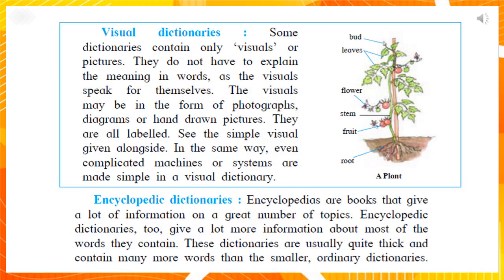See the simple visual given alongside as an example. In the same way, even complicated machines and systems are made simple in a visual dictionary. The meaning of words and their parts is explained through photographs, diagrams, or hand-drawn pictures.